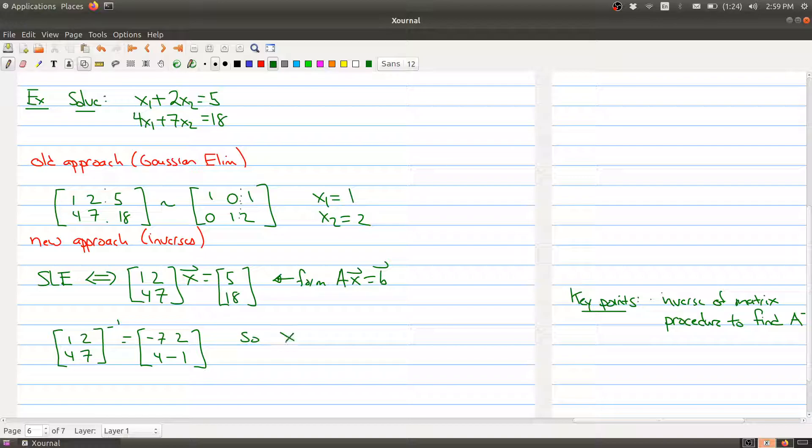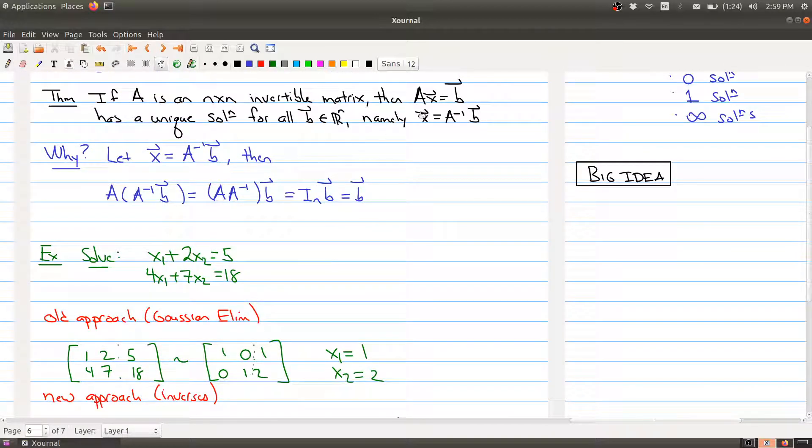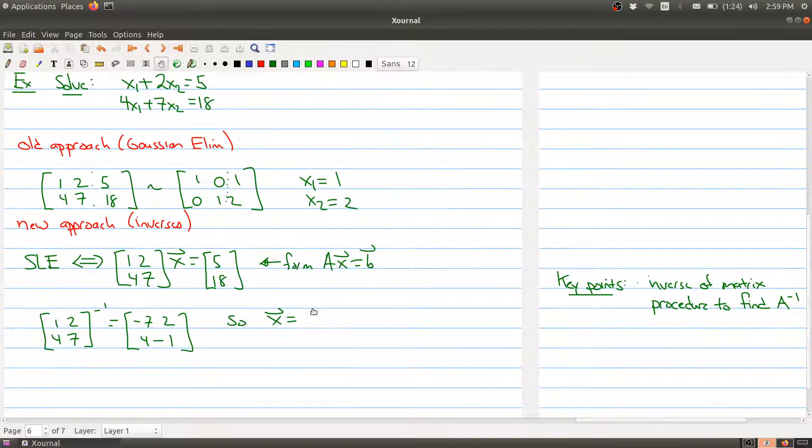So if I want to solve this equation, I can easily do this. So the solution to this equation, according to the theorem up at the top, so we have this matrix as invertible. I want to find the solution. Well, I take b and I multiply it by the inverse of A. So here is my inverse of A, minus 7, 2, 4, minus 1. And I'm going to multiply it by 5, 18.